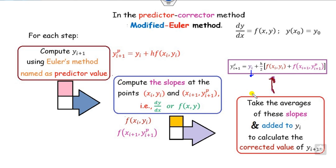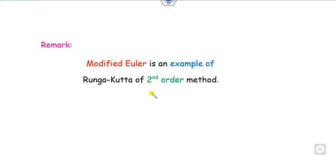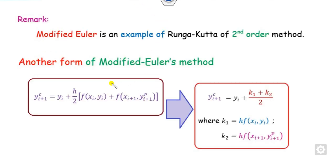We can summarize all steps in a table where the first column is the predicted value and the second column is the corrected value. A useful remark: the modified Euler method is also called the Runge-Kutta second order method. It can also be written as y_{i+1} = y_i + (k1 + k2)/2, where k1 = h·f(x_i, y_i) and k2 = h·f(x_{i+1}, y_{i+1}^p).